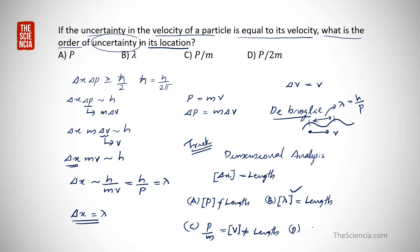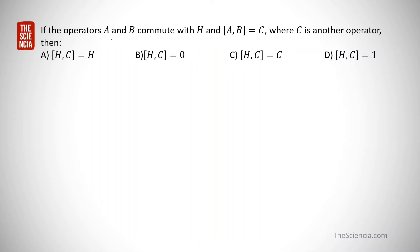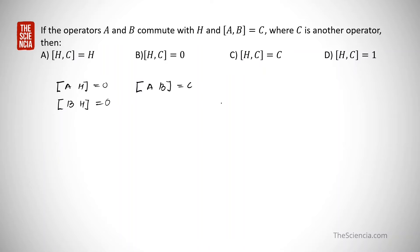Option d also does not have the dimension of length, so the correct answer is option b, lambda. Now for the next problem: operators A and B commute with H, meaning the commutator of A with H equals zero, and the commutator of B with H equals zero. One more condition is given: commutator A, B equals C, where C is another operator. The question is to find commutator H, C.